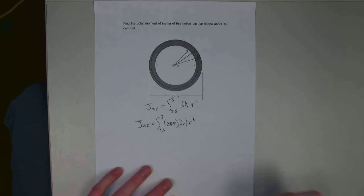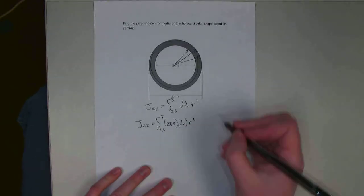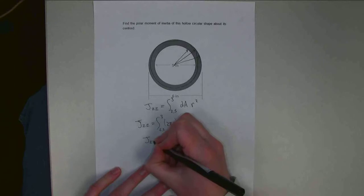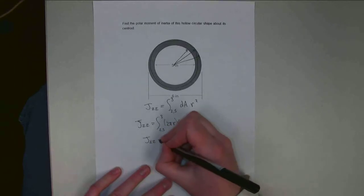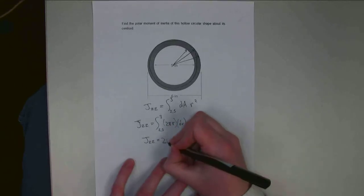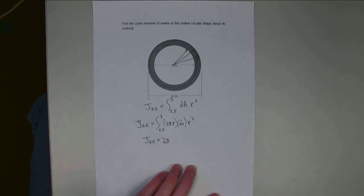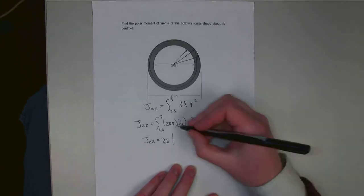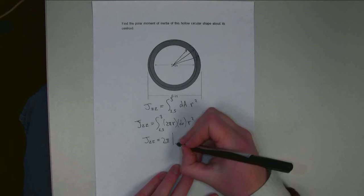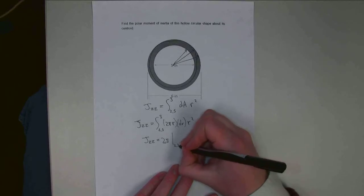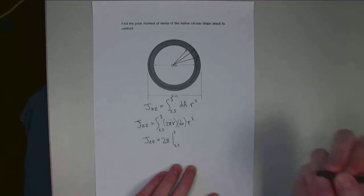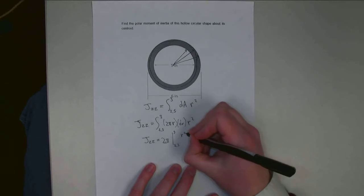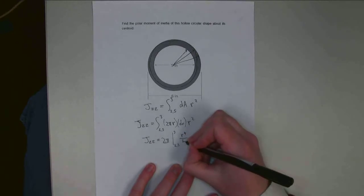So if I rearrange this and evaluate the integral, Jzz is going to be equal to 2π. I've just taken the constant out of the integral itself, and I'm left with the integral of r cubed. And so this is going to be 2.5 to 3, and the integral of r cubed dr is going to be r to the fourth over 4.